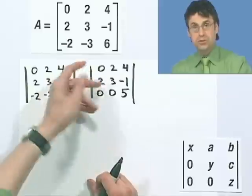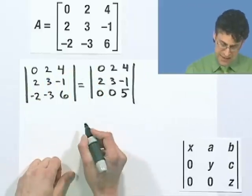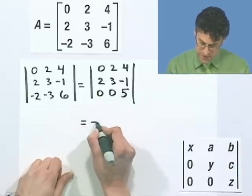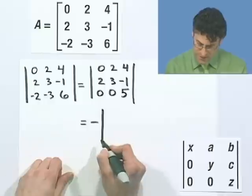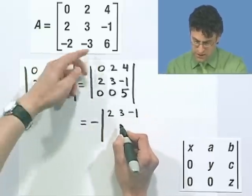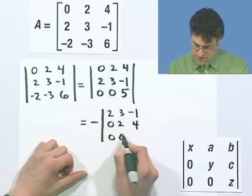So now, if I flip two rows, do you remember what happens? If we flip two rows, we actually introduce a negative sign. So, in fact, this equals, now I'm going to flip the rows, which means I'm going to put the negative sign right in front of that determinant. And now I'm going to flip 2, 3, negative 1, 0, 2, 4, 0, 0, 5.